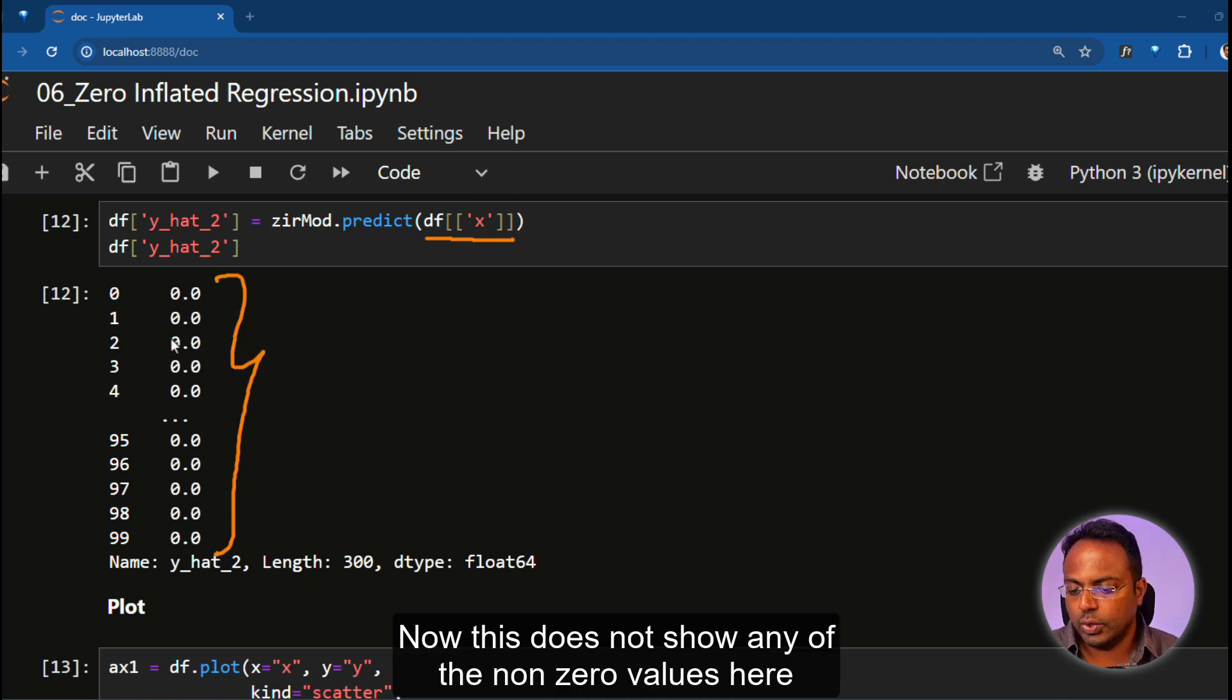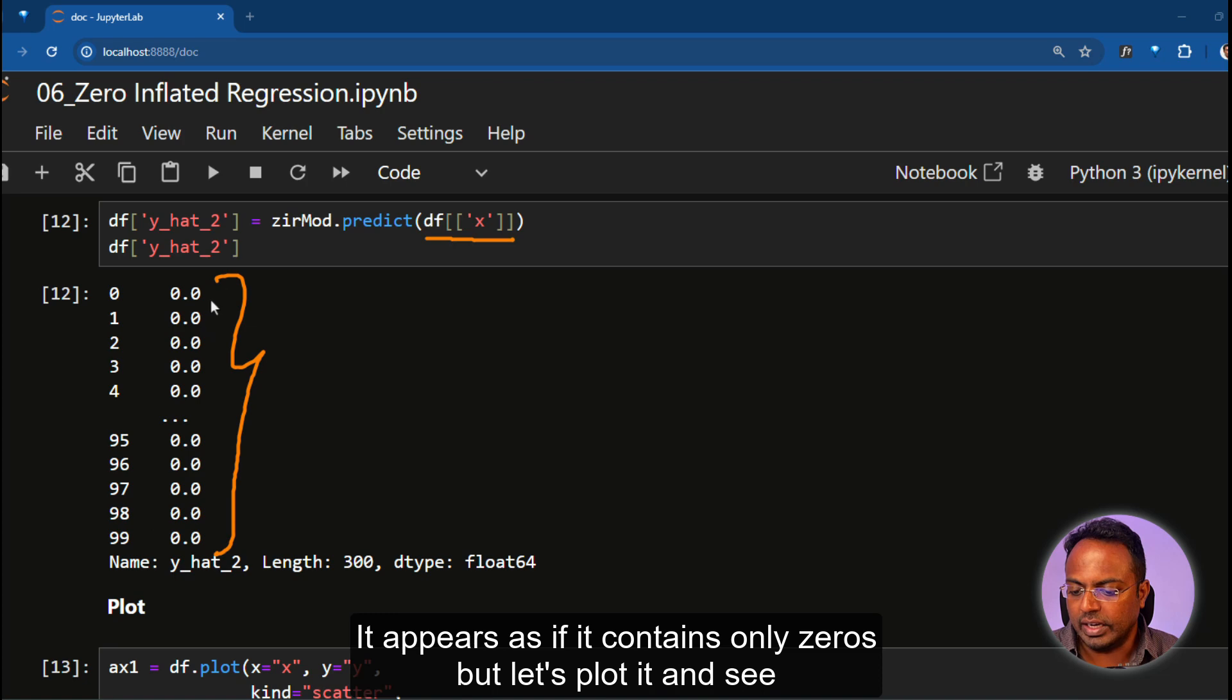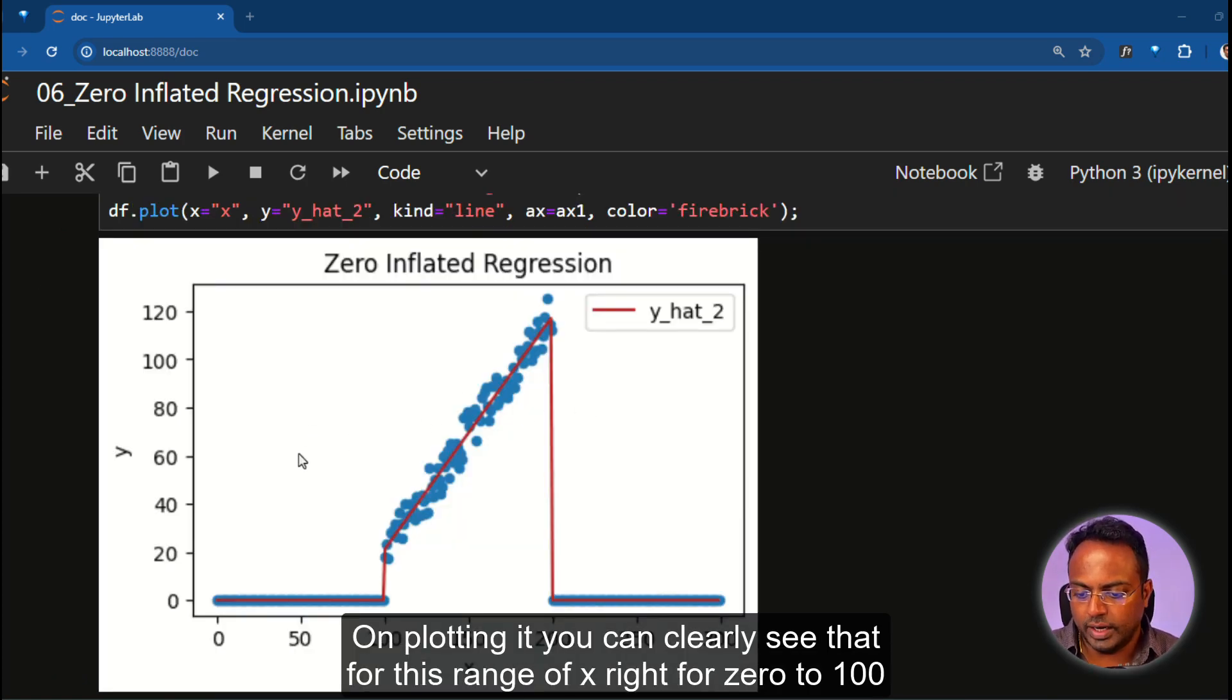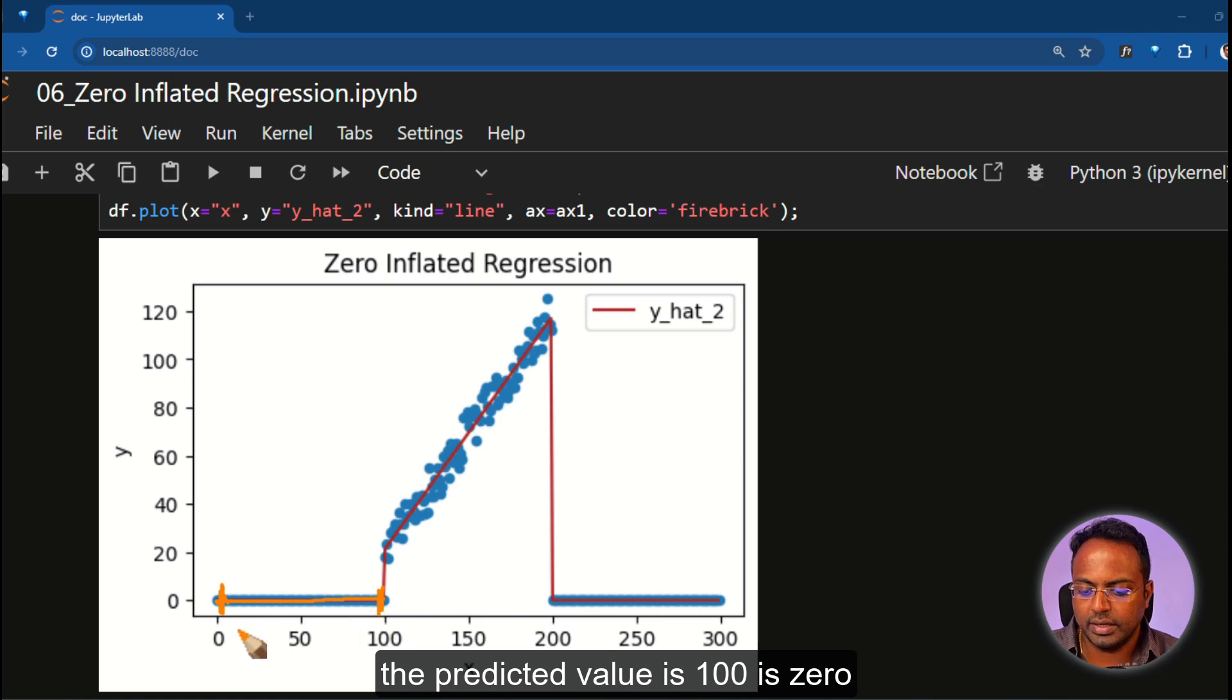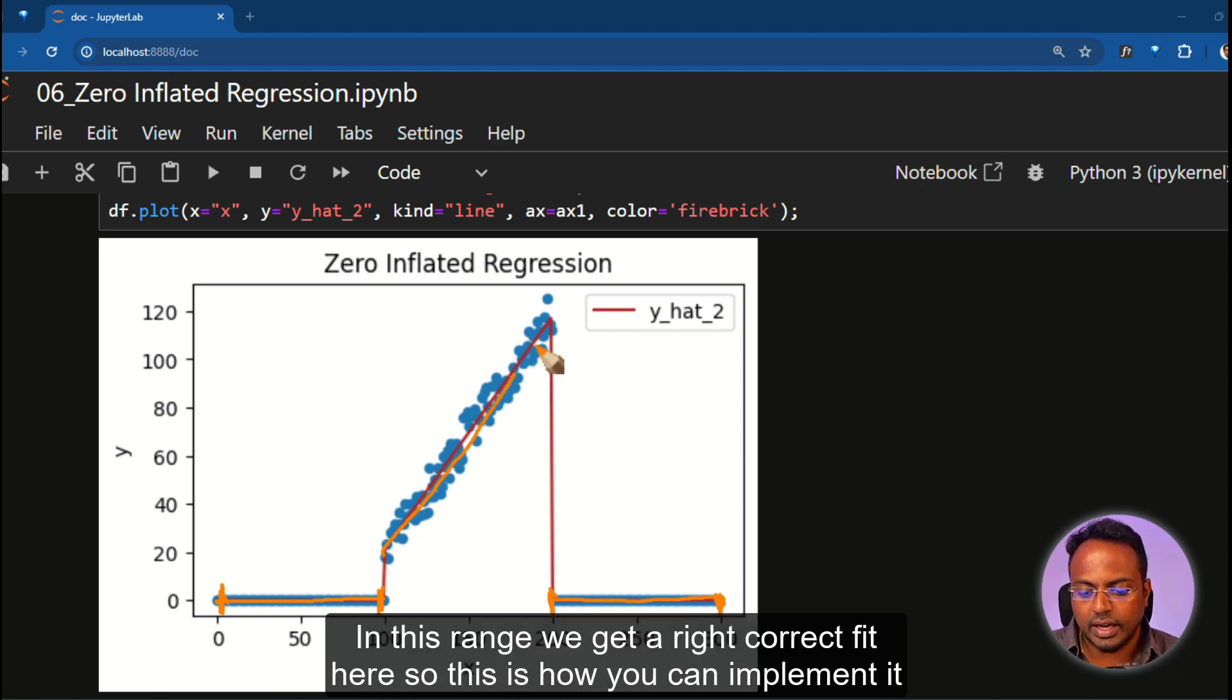Now, this does not show any of the non-zero values here. It appears as if it contains only zeros. But let's plot it and see. On plotting it, you can clearly see that for this range of X, for 0 to 100, the predicted value is zero. Likewise, for 200 to 300, it is also zero. In this range, we get a right correct fit here. So this is how you can implement it.